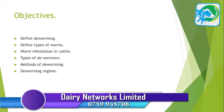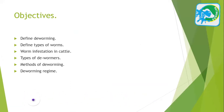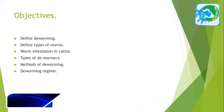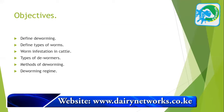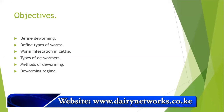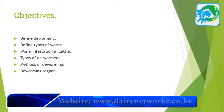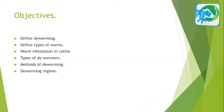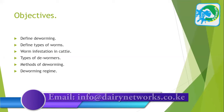In our learning session today we are going to look at a few objectives. We will be defining what de-worming is. We shall also define what types of worms we find generally in cattle, look at worm infestation in cattle and how it looks, identify types of de-wormers commonly used, and look at the methods of de-worming, a de-worming regime, and ways to prevent worms or internal parasites occurring in your herd.